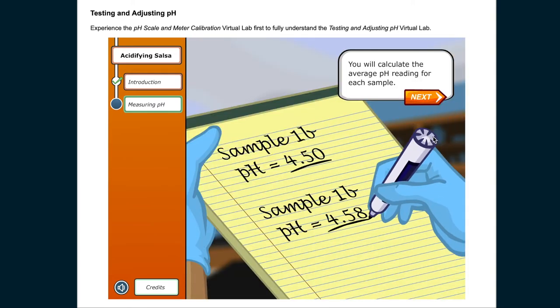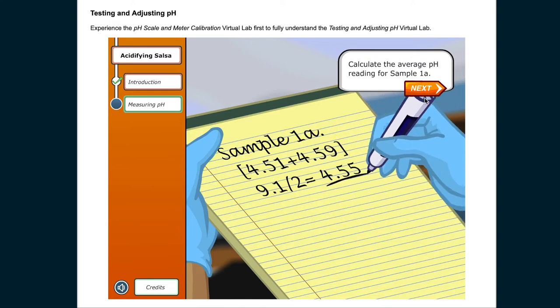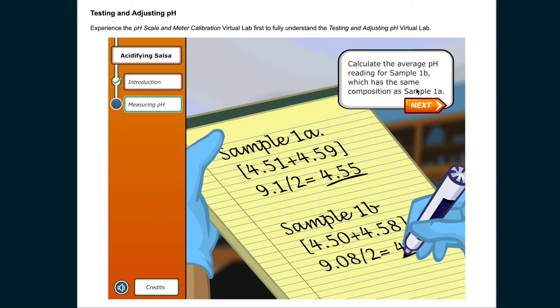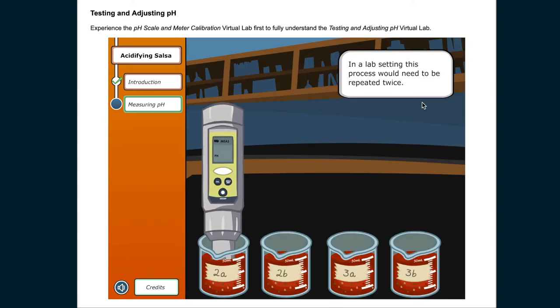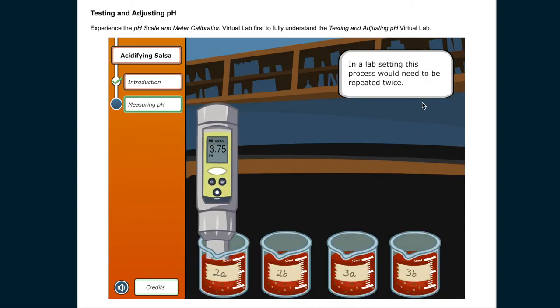You will calculate the average pH reading for each sample. Calculate the average pH reading for sample 1A. Calculate the average pH reading for sample 1B, which has the same composition as sample 1A. In a lab setting, this process would need to be repeated twice.